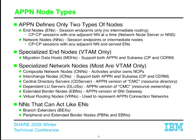APPN really defines only two types of nodes: end nodes and network nodes. End nodes are session endpoints only — they cannot be intermediate routing nodes, and as such they do not participate in many of the networking functions that typically go on. End nodes have CPCP sessions with only one adjacent network node at a time, and that adjacent network node is called their network node server. End nodes can have as many links into the network as they want, to other network nodes or other end nodes, but they only have CPCP sessions to one network node at a time, which is their network node server.